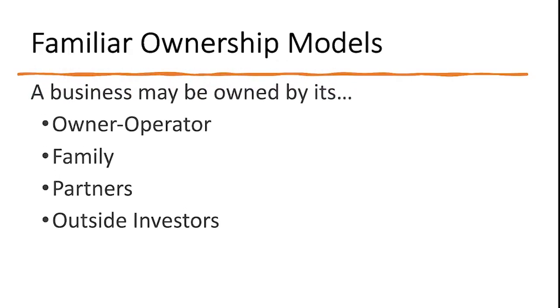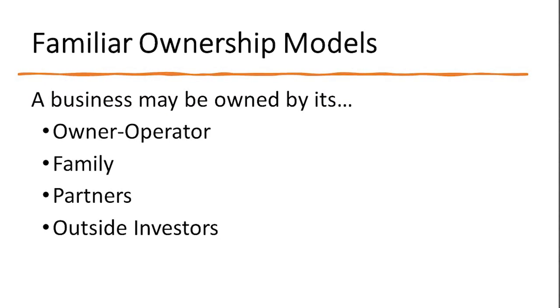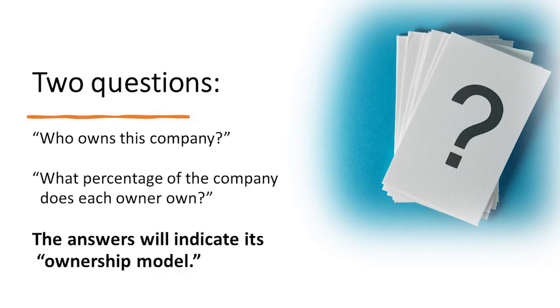First is the concept of an ownership model. Every single business, whatever its legal structure, has an ownership model — meaning a structure of ownership. A business may be owned by its owner-operator, who's often the founder. It may be owned by a family, or by a small group of partners, or by outside investors. Or there may be a combination of different owners, each owning a percentage of the company. Who owns this company, and what percentage does each owner own — the answers indicate its ownership model.